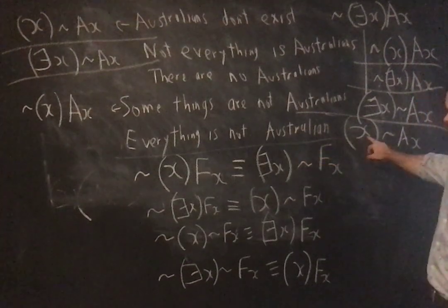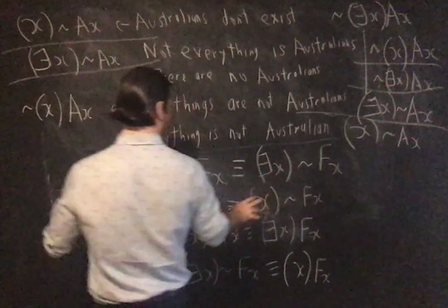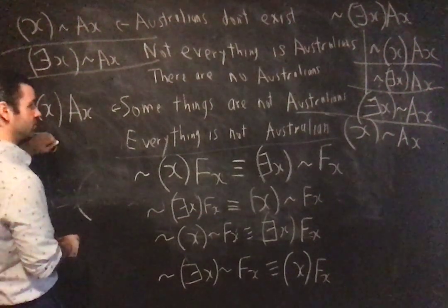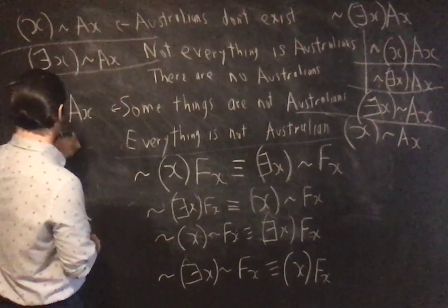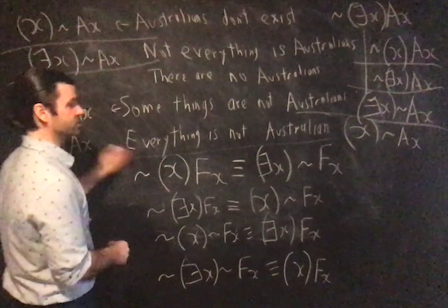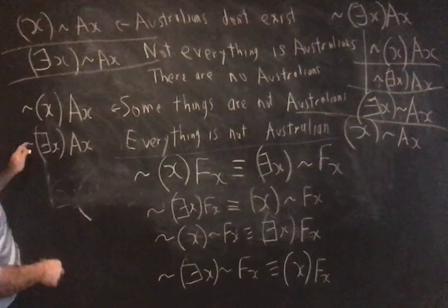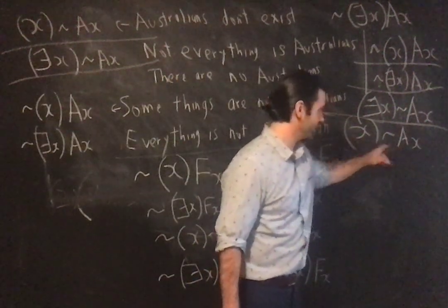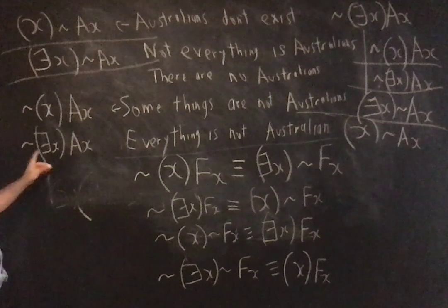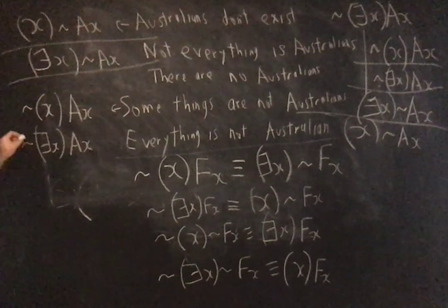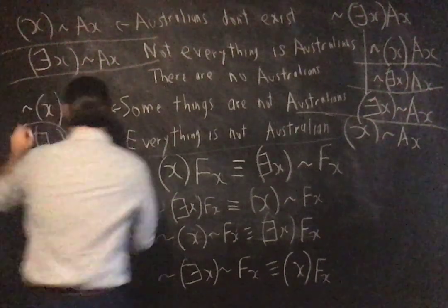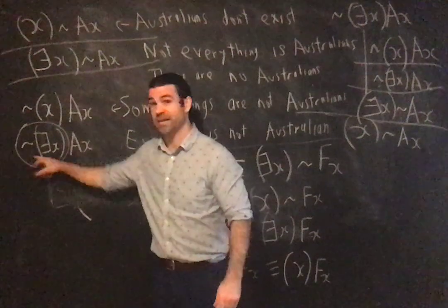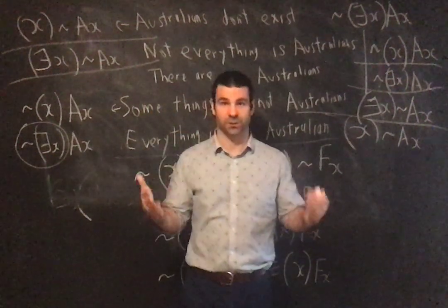Everything is not Australian — for all x, not Ax — means there does not exist an x which is Australian. If everything is not Australian, then there does not exist an x such that x is Australian. You can also read this as 'nothing.' When you see 'nothing' in English, you should translate it as the denial of existence: it's not the case that there exists an x.